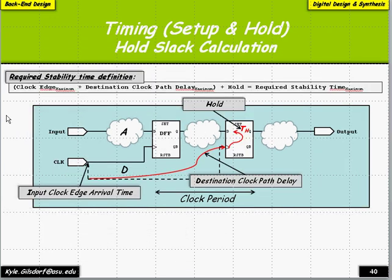Now that we know when the data arrives — whether from an input-to-register or reg-to-reg scenario — we need to know how long that signal needs to be held past the clock edge to meet timing. Adding formalism: the data required time is the clock edge time, plus the destination clock path delay, plus the hold time. That tells us our required stability time — we have to hold the signal out that much longer past the clock edge.